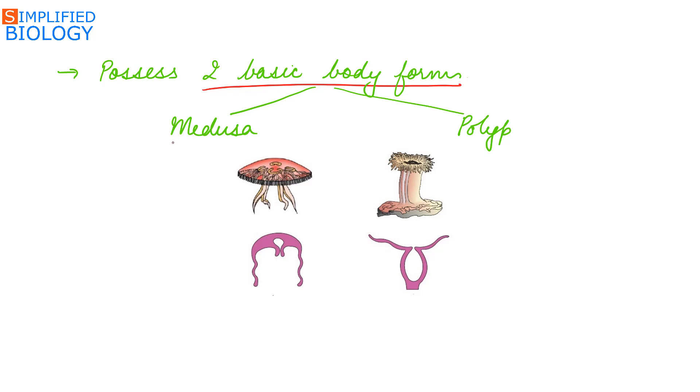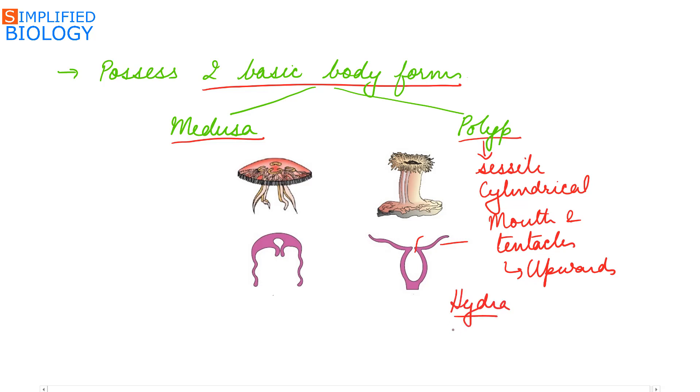Cnidarians possess two basic body forms: one is the medusa and the second one is the polyp. Polyp is sessile, cylindrical, and the mouth and the tentacles are facing upwards. Example of polyp is Hydra and Adamsia.